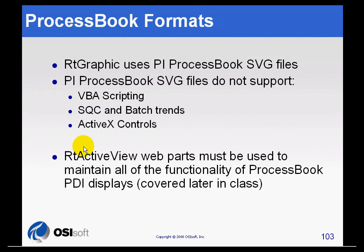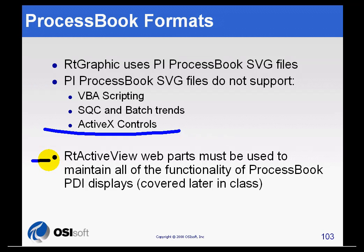If you are interested in preserving all of the same functionality that we have had for years with Process Book, we do have something called RT ActiveView. RT ActiveView is a web part that allows you to host the native PDI files on a web part page. That is an option if you do not want to give up VBA scripting and some of those other things not yet supported using the RT Graphic web part.